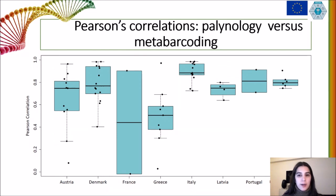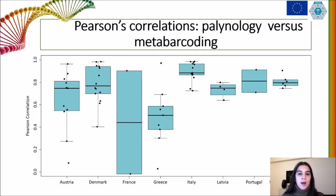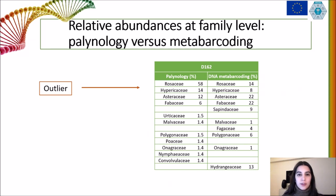Overall, palynology and DNA metabarcoding show good correlation, with Italy, Latvia, and the United Kingdom showing the best correlations. Some outliers can be spotted, mainly in Denmark, Austria, and Greece. These samples are going to be re-analyzed to make sure it was not a sequencing artifact. France, which has a small number of samples — only two — shows a wide interval of correlation due to one sample having a negative correlation, and this sample is also being re-analyzed. Greece shows the worst correlation between the two methods, with a median correlation around 0.5. The Danish outlier, with a correlation around 0.4, shows most families present for both methods but with completely different abundance.